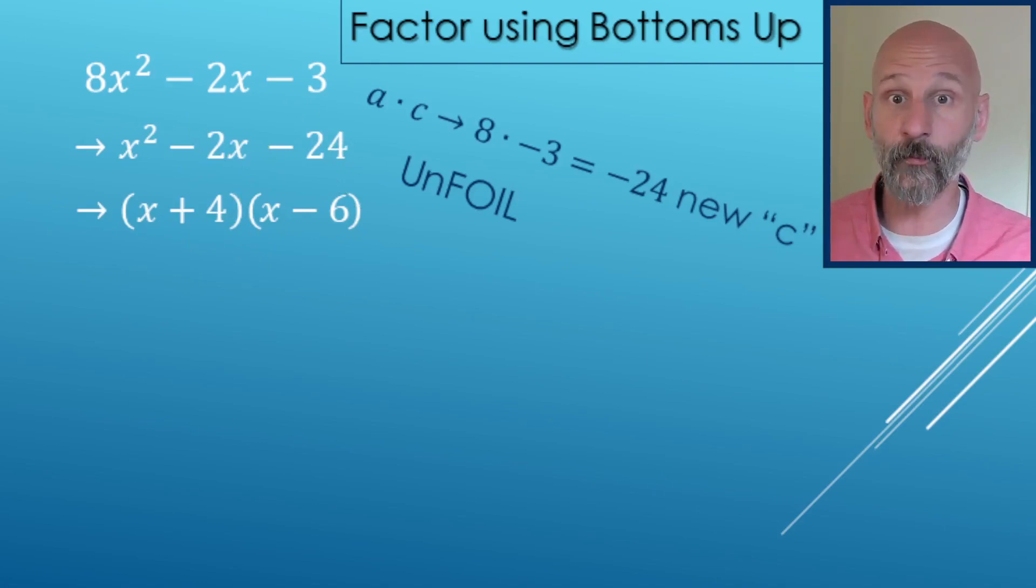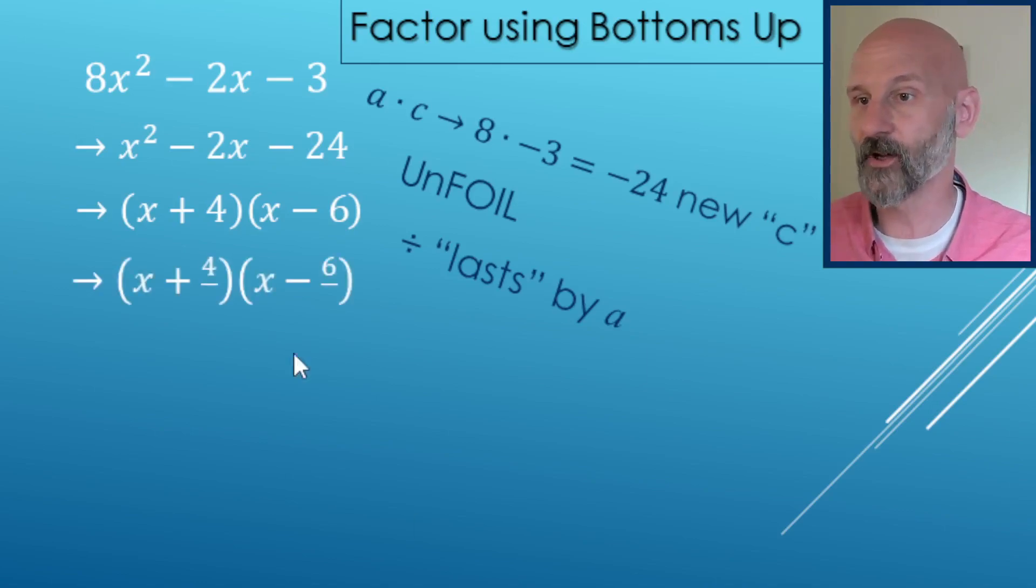Now remember that eight that we didn't write up here in this step here, now it comes back. So that's coming back. Here we go. So instead of X plus four, we're going to write X plus four over this number here, eight. And then same thing here with, instead of X minus six, it's X minus six over eight. So that's where that number comes back.